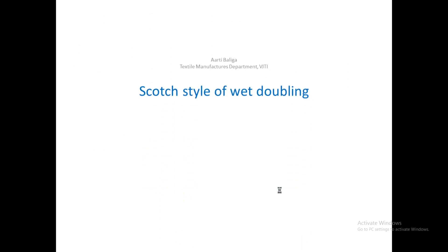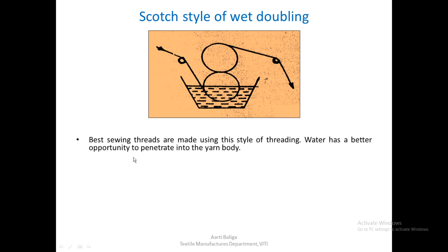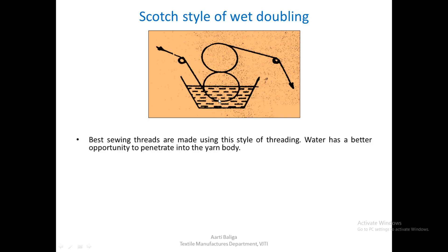In the Scotch style of wet doubling, the rollers themselves are immersed in the trough of water. This is the style used for producing the best sewing threads, as water has a better opportunity to penetrate the yarn body. The yarn is wetted for a longer period and then squeezed between the rollers to remove excess water before passing on for twisting.